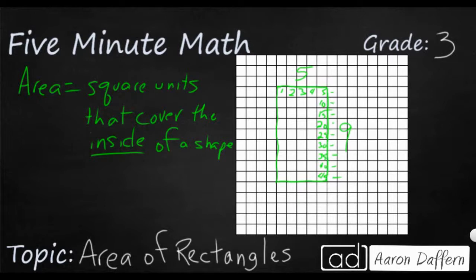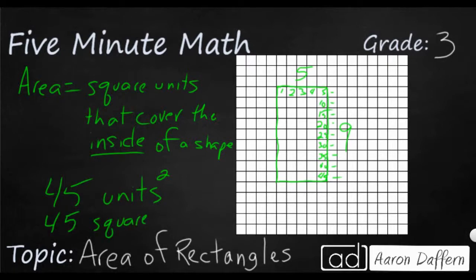So we would say the area of this one would be 45. There are two ways to write it — you would say units with a little 2 meaning squared, or you might write 45 square units. Most of you noticed that once you've figured out how many columns there were — 5 across — and how many rows — 9 up and down — that just becomes a multiplication fact, because this really is an array. 5 times 9 equals 45.